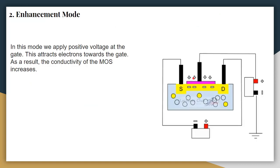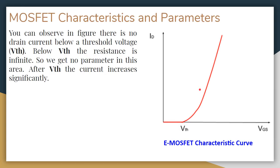In the enhancement mode of the D-MOSFET, we apply a positive terminal of the battery at the gate. This is similar to the E-MOSFET: the positive gate attracts electrons from the body, which accumulate between the drain and source. Since the channel already exists, even more electrons join it from the body, so the conductivity between the drain and source increases.